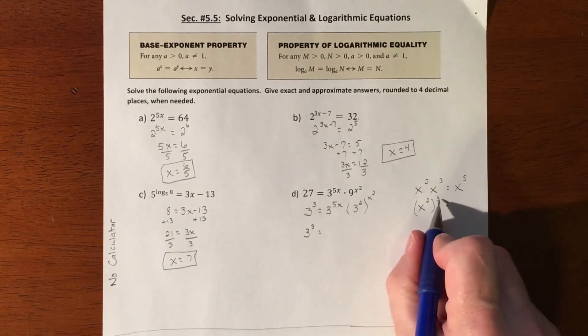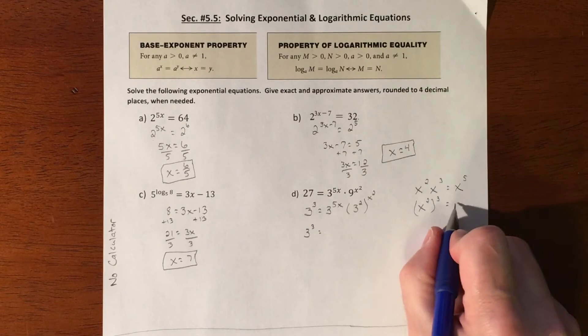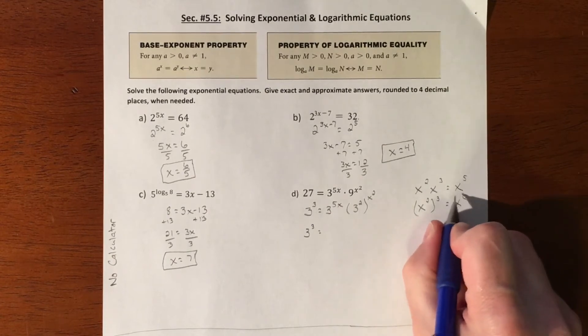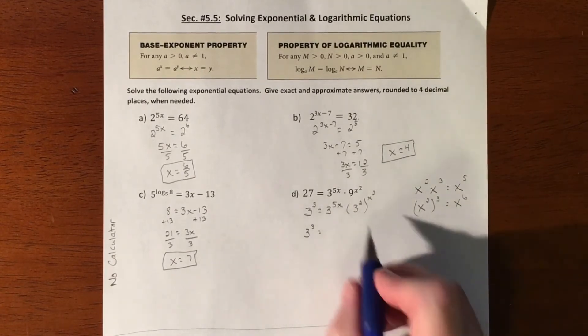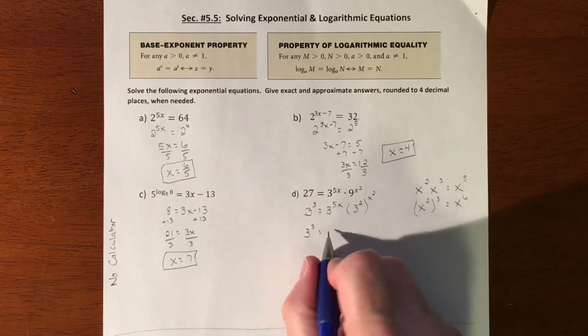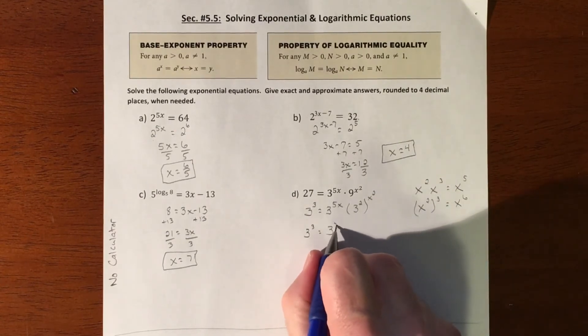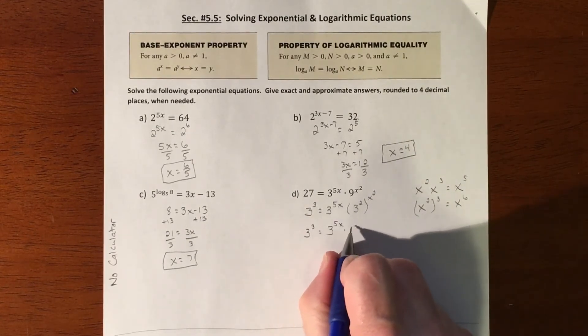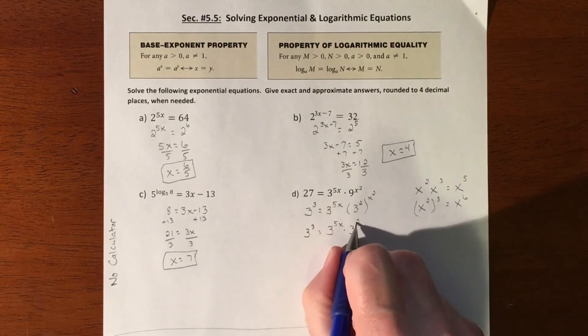Where a power raised to a power, you're going to be multiplying. So we're actually going to have both scenarios going on here. We have this one where we're going to multiply these two powers together. So then that's times 3 to the 2x squared.